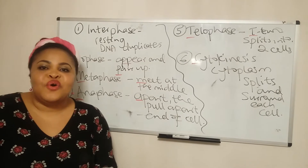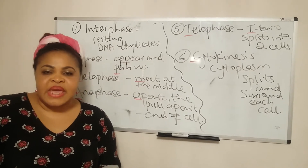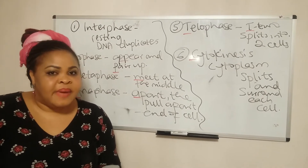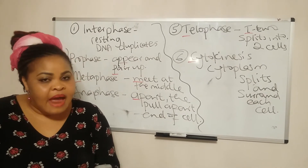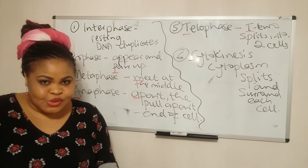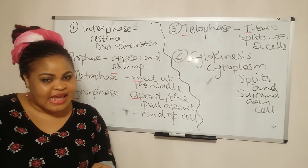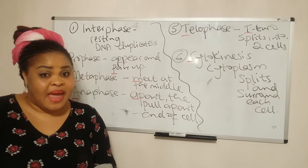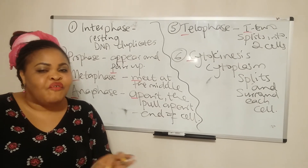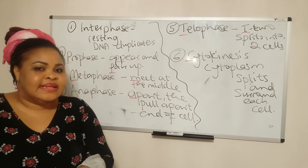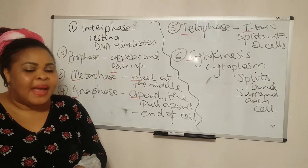Then you go on to prophase. P for appear and pair up — that's what happens there. That's where the chromosomes start to appear. So P for appear and for pair up.